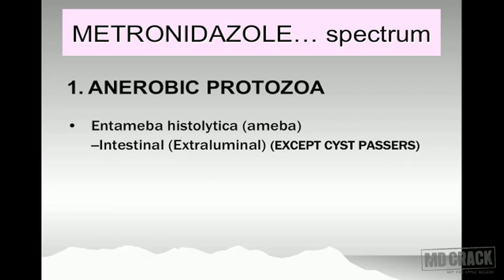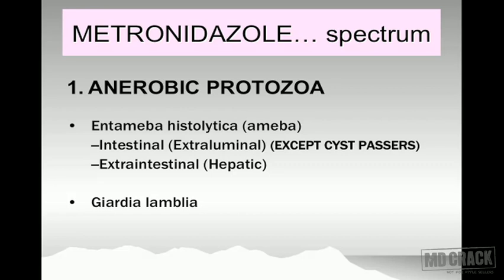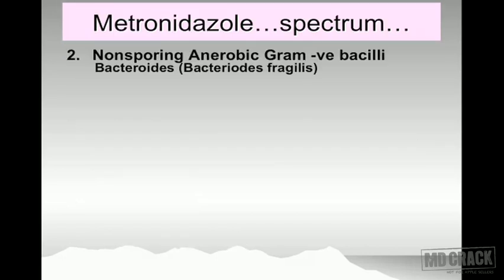The amoeba present in the lumen are usually the cysts, and metronidazole is not going to inhibit the cysts — it inhibits organisms present in the intestinal wall, so extra-luminal. It also inhibits extra-intestinal organisms present in other tissues, for example the liver — that's hepatic amoebiasis. The second important protozoa is Giardia lamblia producing giardiasis, and the third is Trichomonas vaginalis. So in anaerobic protozoa: amoeba, Giardia, and Trichomonas.